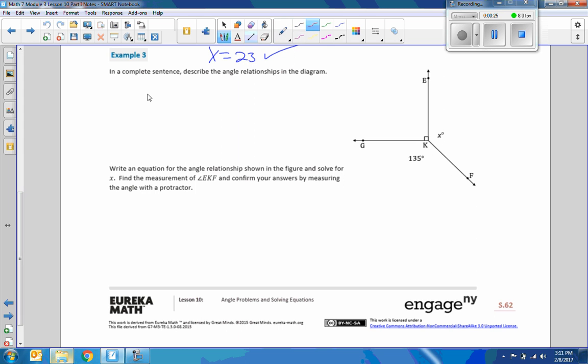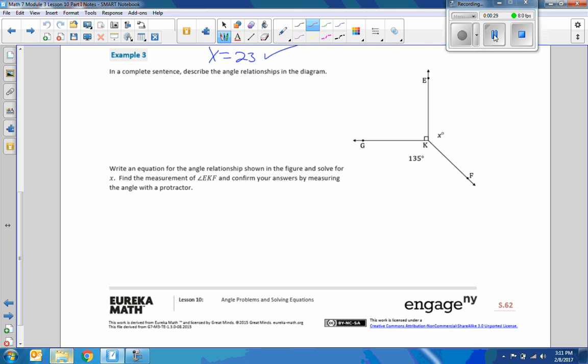Now we're on to example 3. It says in a complete sentence describe the angle relationships in the diagram. Here it is: angle GKE. So as I've done before and I'll continue doing to get the hang of this, angle GKE, just follow the letters. There's angle GKE, angle EKF in green, angle GKF. These are angles at a point and their measures have a sum of 360 degrees. Now it says write an equation for the angle relationship shown in the figure and solve for X. Find the measurement of angle EKF and confirm your answer by measuring the angles with a protractor.